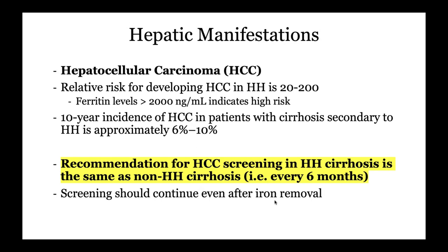Patients may also develop hepatocellular carcinoma — most commonly in the setting of cirrhosis, but it can still happen without cirrhosis. The relative risk is about 20 to 200-fold. A ferritin level above 2,000 in hemochromatosis indicates high risk for HCC. The 10-year incidence of HCC in hemochromatosis-related cirrhosis is 6% to 10%. Despite this increased risk, the general recommendation is to screen them just as we screen regular cirrhotics — Q6 months ultrasound and AFP — and continue screening even after iron unloading.